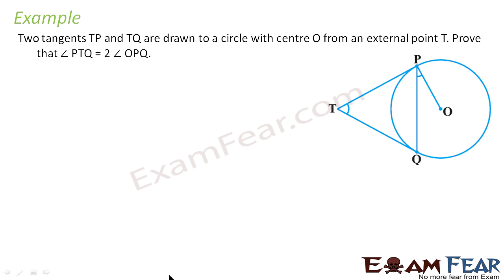What is the approach we should follow? First, what is given to us? We know this angle is 90 degrees, because TP is a tangent, so the tangent is perpendicular to the radius. Also, we know that from a given point T, if we draw two tangents, both tangents are equal. So TP will be equal to TQ.